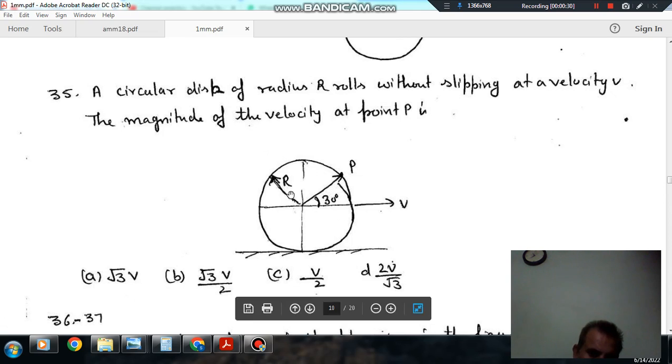And radius R, and velocity of the rolling is V. So the magnitude of the velocity of point P is: option A, √3V; option B, √3V/2; option C, V/2; option D, 2V/√3.